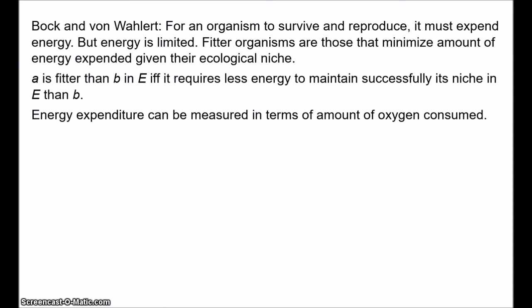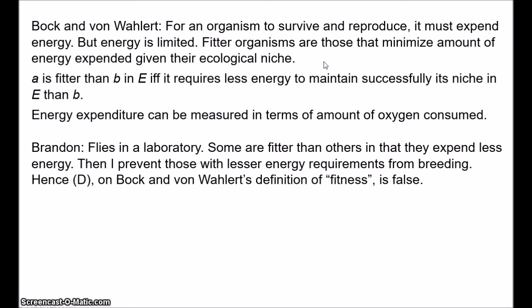There are various problems with this definition, but I want to focus on Brandon's argument against it. Brandon says: suppose I'm breeding flies in the laboratory. Some flies are fitter than others by Bock and von Warlett's criteria in that they expend less energy. Then I prevent those flies with lesser energy requirements from breeding, while allowing those with greater energy requirements to breed. In my laboratory, it's not the case that organisms with lesser energy requirements will probably have more offspring. This is a case of artificial selection — but artificial selection is just one kind of natural selection. If we accept Bock and von Warlett's definition, then D becomes false — it fails the criterion of empirical correctness, because the fitter organisms in the laboratory will not tend to have more offspring.